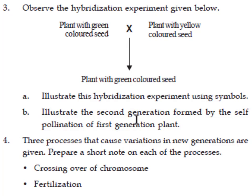Illustrate the second generation formed by the self-pollination of the first generation plant. The first generation plant with green colored seed (Gg) is self-pollinated to produce the second generation.